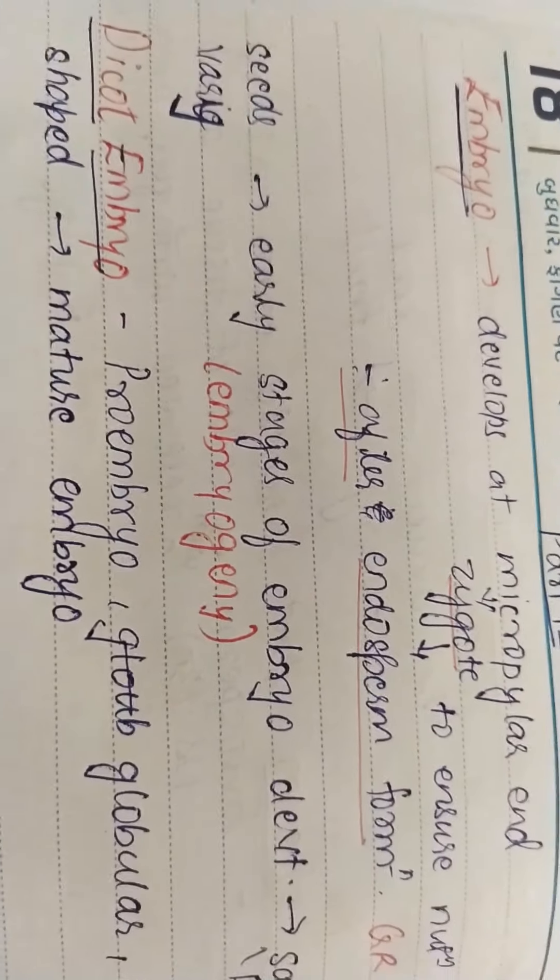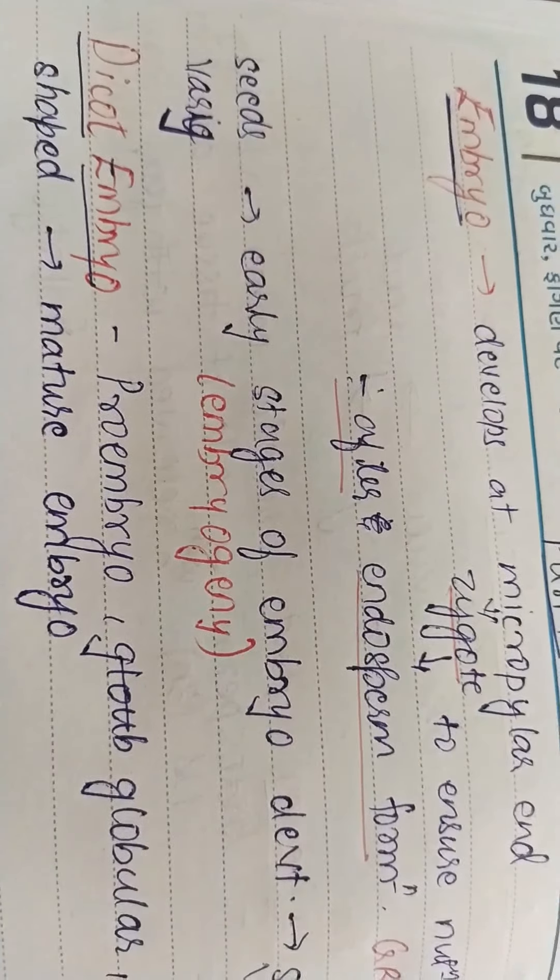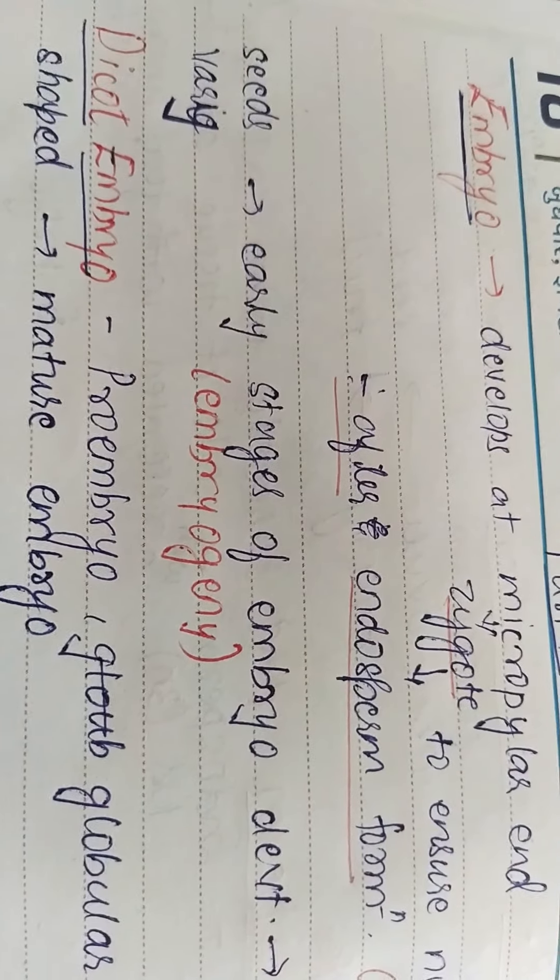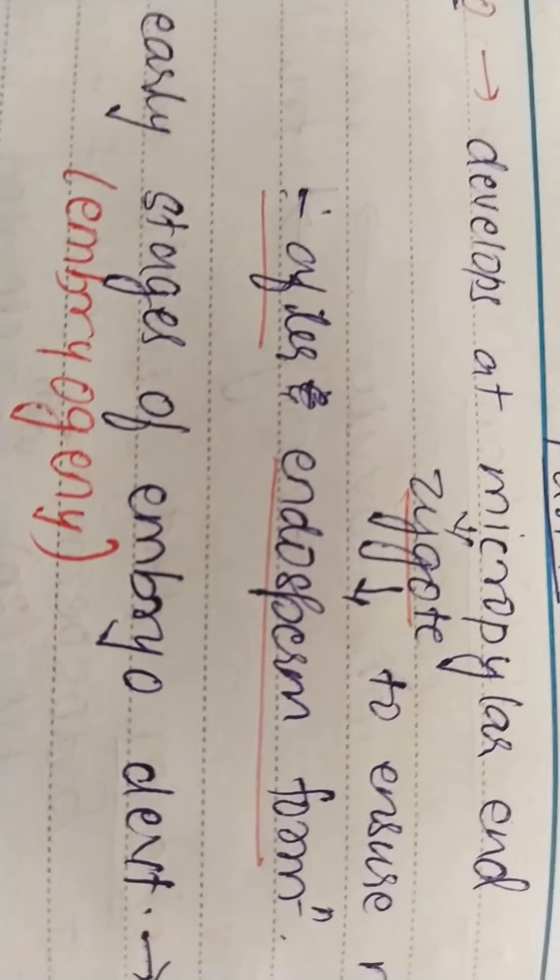Hello students, the next part after endosperm development is embryo development. Now embryo will always develop at the micropylar end where the zygote is present.